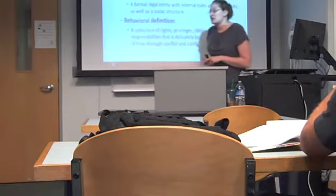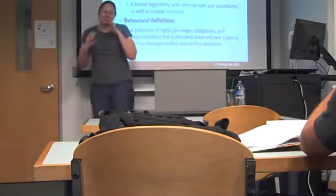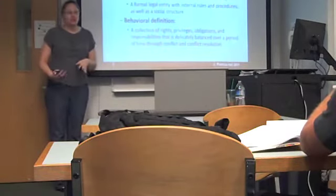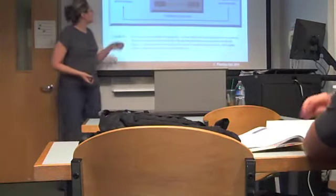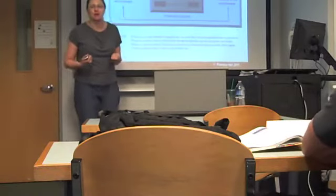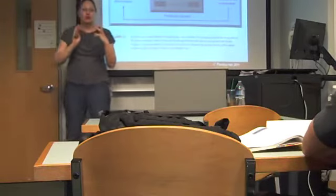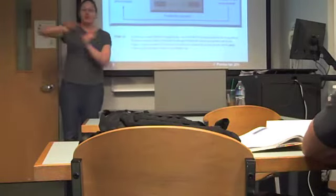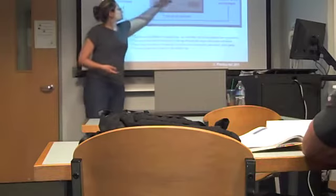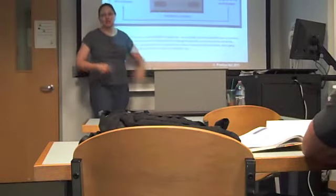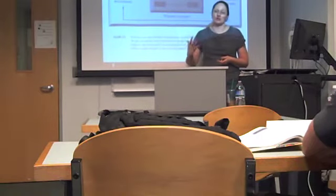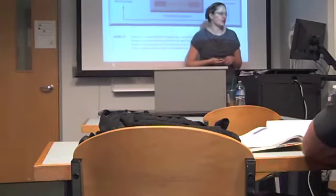So we can start by asking: what is an organization? You can look at two different types of definitions. A technical definition says that an organization is basically a set of inputs from the environment — resources we're pulling in — that we process and turn into a product or service, which we then send as outputs to the environment. Most organizations 20 years ago would have been manufacturing organizations, but now we have a lot of service industry organizations.